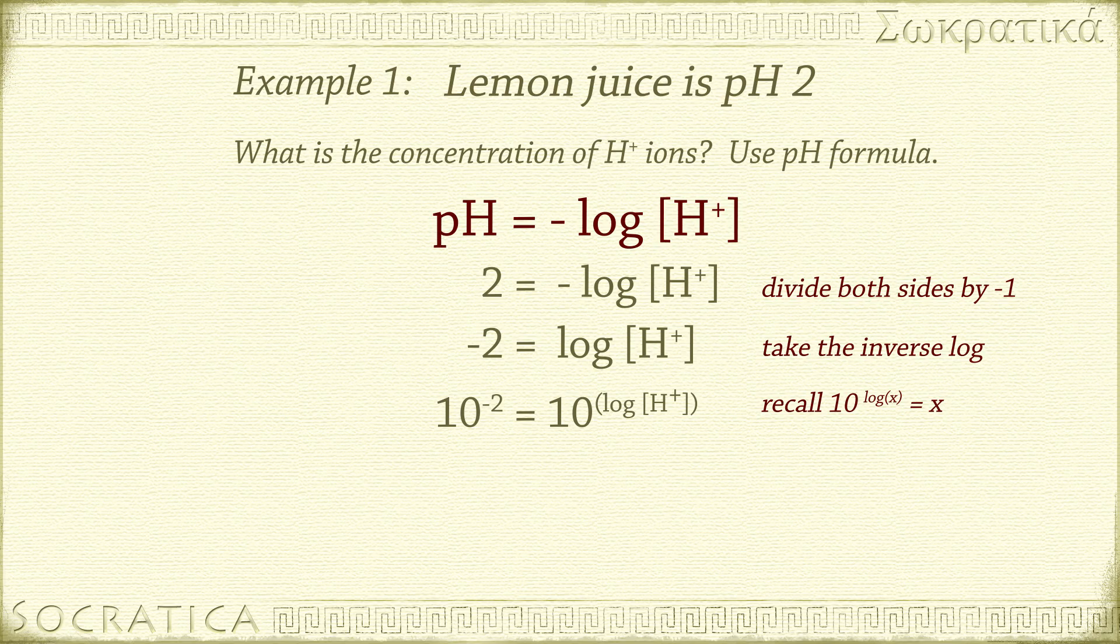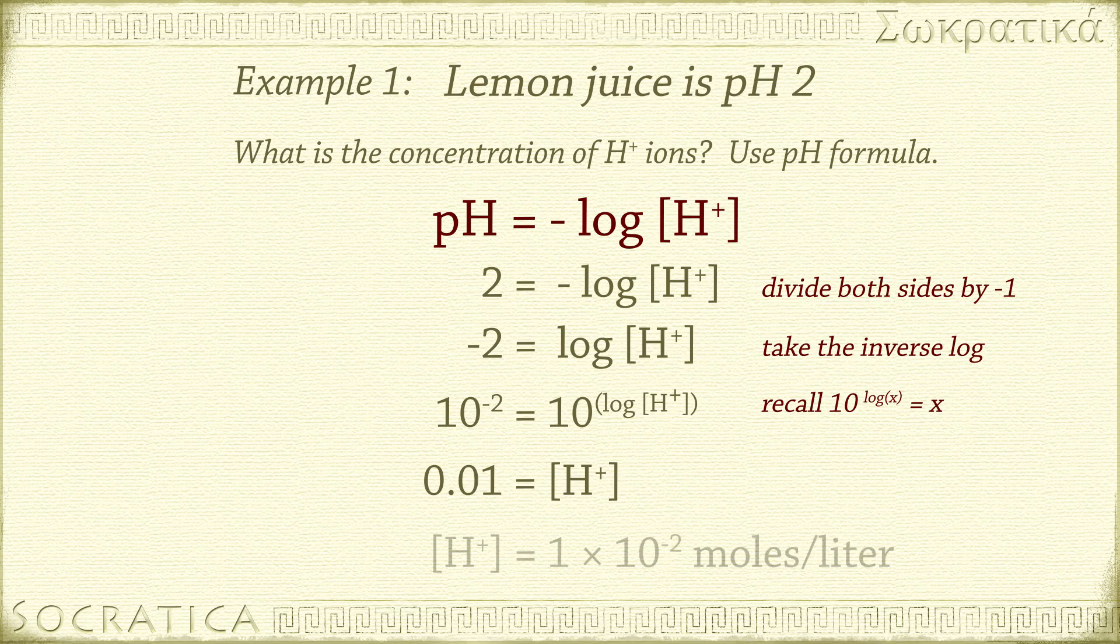That gets rid of the log on the right, leaving just the concentration of H+ ions. 0.01 equals the concentration of H+ ions. We can write this using scientific notation. The concentration of H+ ions equals 1 times 10 to the negative 2 moles per liter.